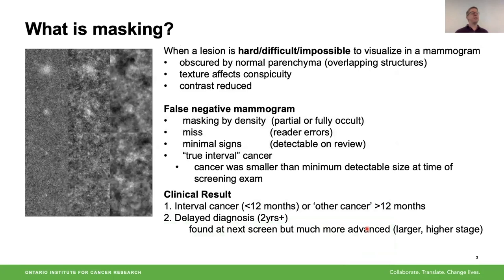We want to address that and be able to improve screening programs by improving sensitivity in the dense breast. We believe that the problem is due to something called masking. Masking is just really hiding that lesion in that tissue background. When masking occurs, the lesion is either hard, difficult, or actually impossible to visualize when it's obscured by the normal parenchyma, those overlapping structures.